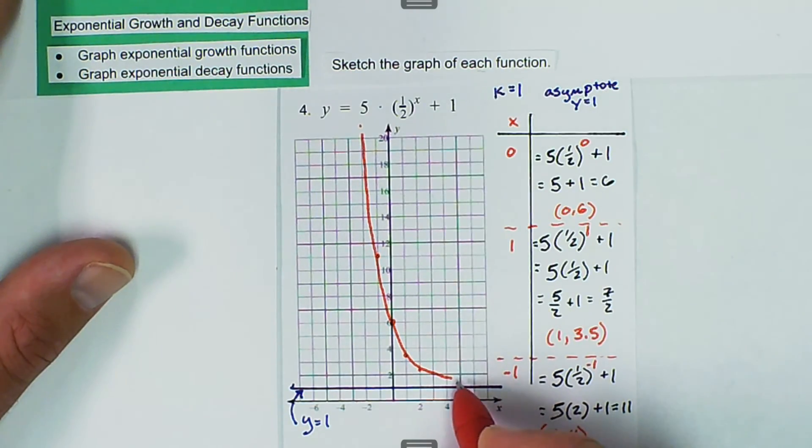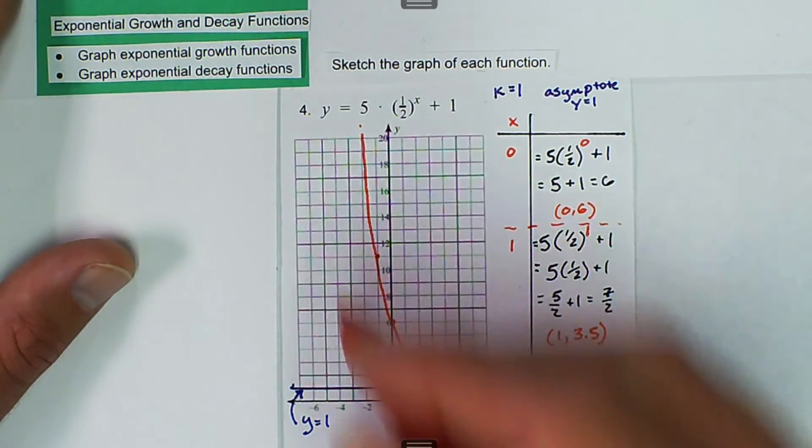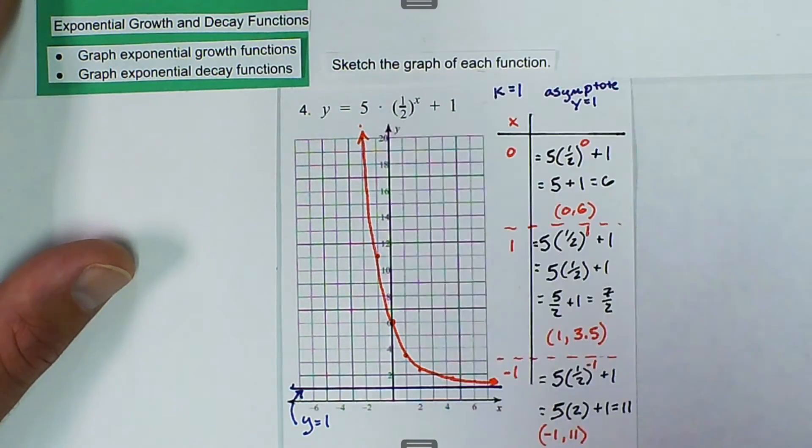And then we can sketch our graph that goes through those points. And then we're going to get close to, but not touch, our asymptote.